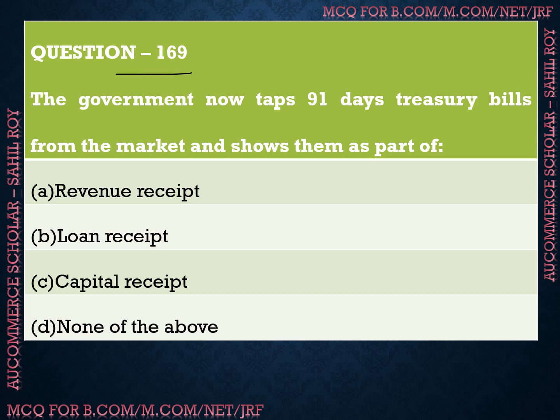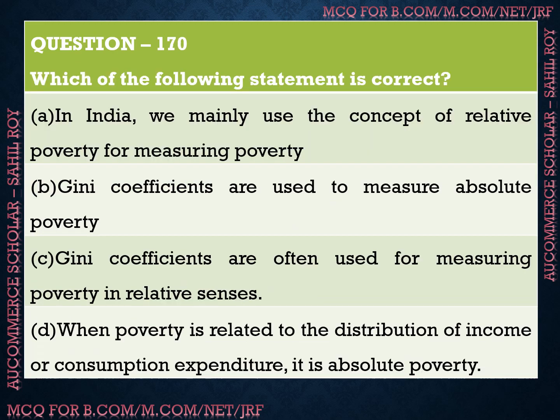Question number 169: The government now taps 91-day treasury bills from the market and shows them as a part of which receipt? Option A is revenue receipt, Option B is loan receipt, Option C is capital receipt, and Option D is none of the above. The correct answer is Option C — capital receipt. The government taps 91-day treasury bills from the market and shows them as a part of capital receipt.